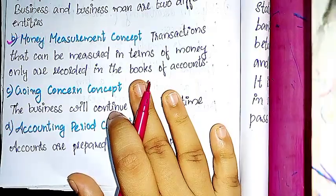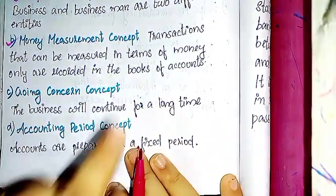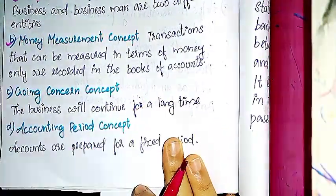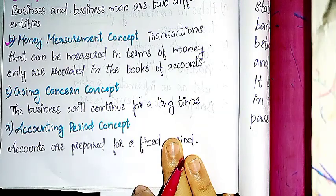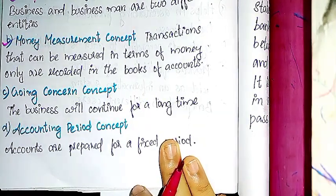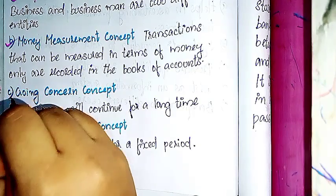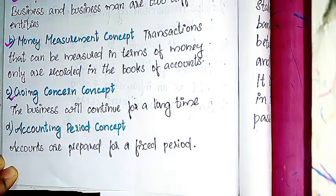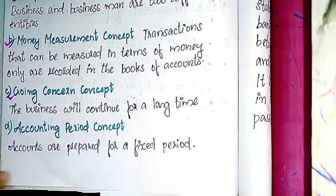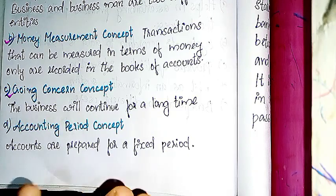The Going Concern Concept states that the business will continue for a long period of time. The Accounting Period Concept states that accounts are prepared for a fixed period.